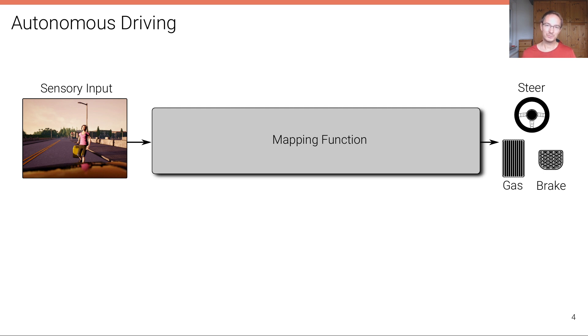An autonomous driving stack can be seen as a function that takes a high-dimensional sensory input, such as an RGB image or video, or a sequence of LiDAR laser scans, or radar, or ultrasonic measurements, or all combined.